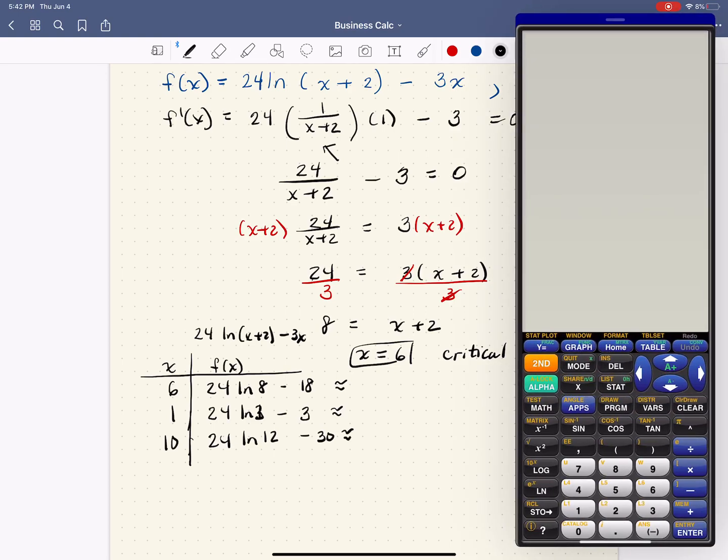So what are all of those? Well, let's take a look. So what we have is 24 natural log 8 minus 18. It looks like it's about 31.91.